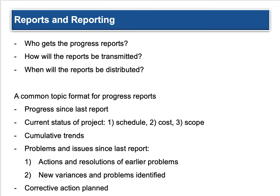A common format for progress reports includes: progress since the last report — how has it gone since your last milestone; current status of the project covering schedule, cost, and scope; cumulative trends — positive or negative and how they affect the potential outcome; problems and issues since the last report, including actions and resolutions of earlier problems; new variances or unforeseen problems that need diagnosis; and your corrective action plan.